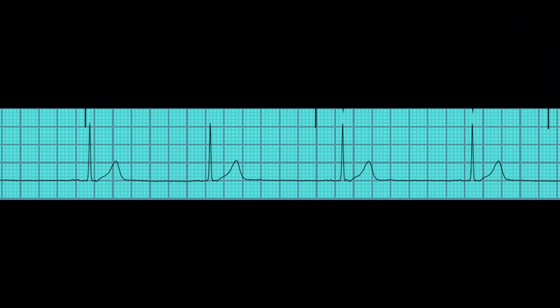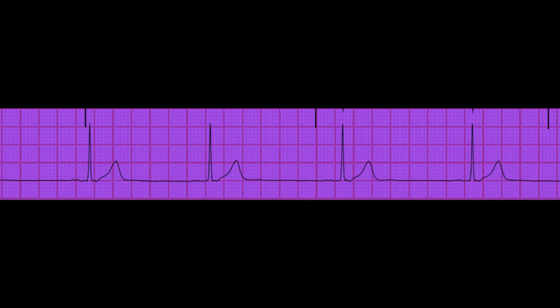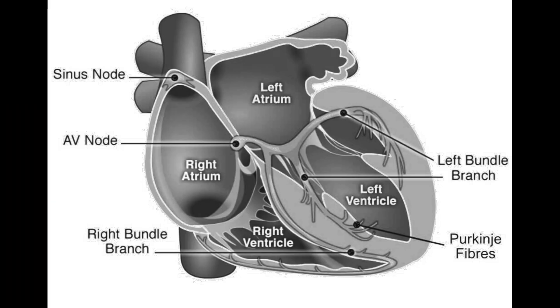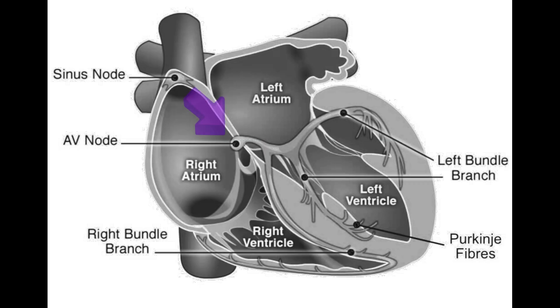First, let's start by understanding the mechanism of a junctional rhythm. Normally, the heart's electrical impulses originate from the sinoatrial or SA node, which acts as the primary pacemaker of the heart. The impulses then travel to the atrioventricular or AV node, which delays the conduction of the electrical impulse to allow the atria to contract before the ventricles.